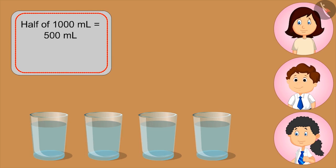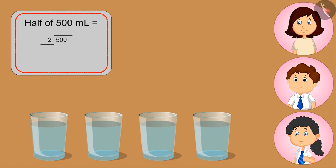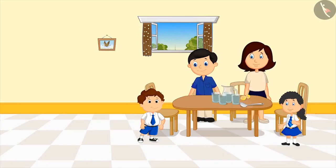Yes, Mom. Can you tell how much lemonade is in one glass? Half of five hundred ml. Very good. So what's that? Kids, you can pause the video and think about the answer. We have to divide five hundred by two — two hundred and fifty. Very good, Bholu. Daddy, we all got two hundred and fifty ml of lemonade.